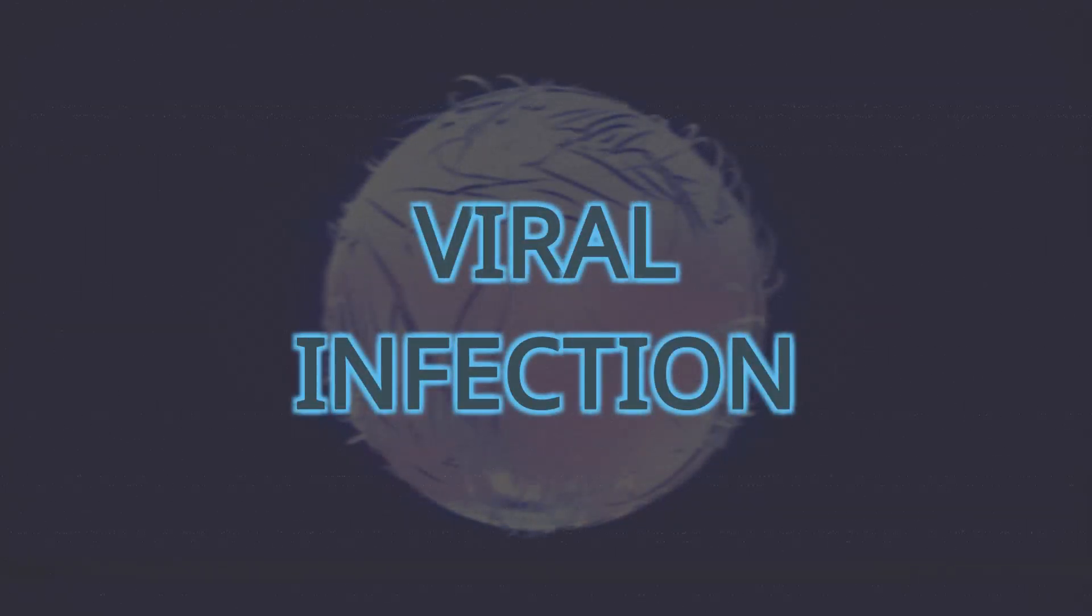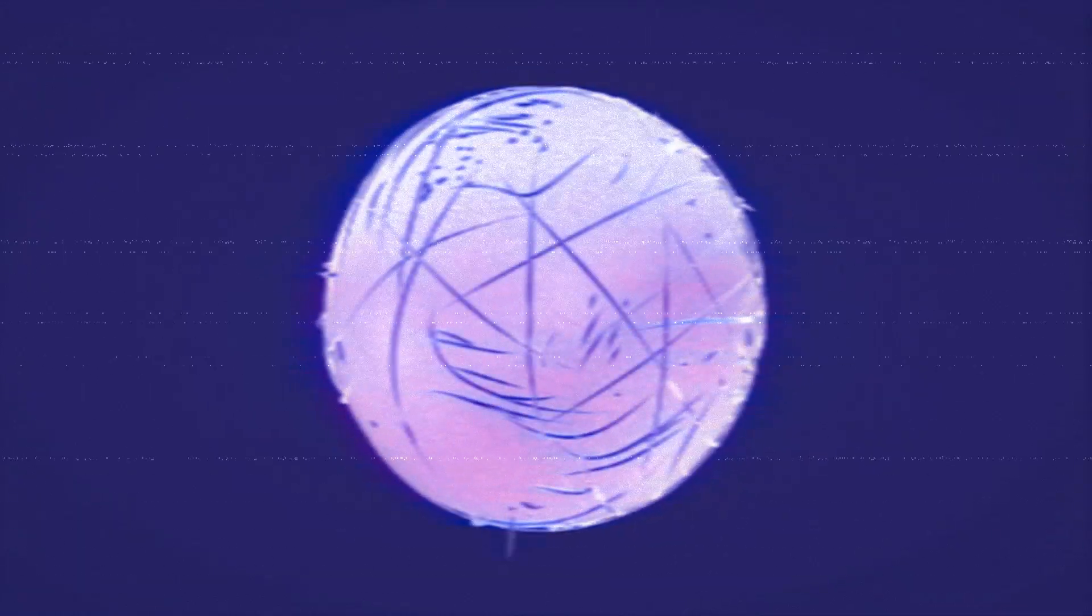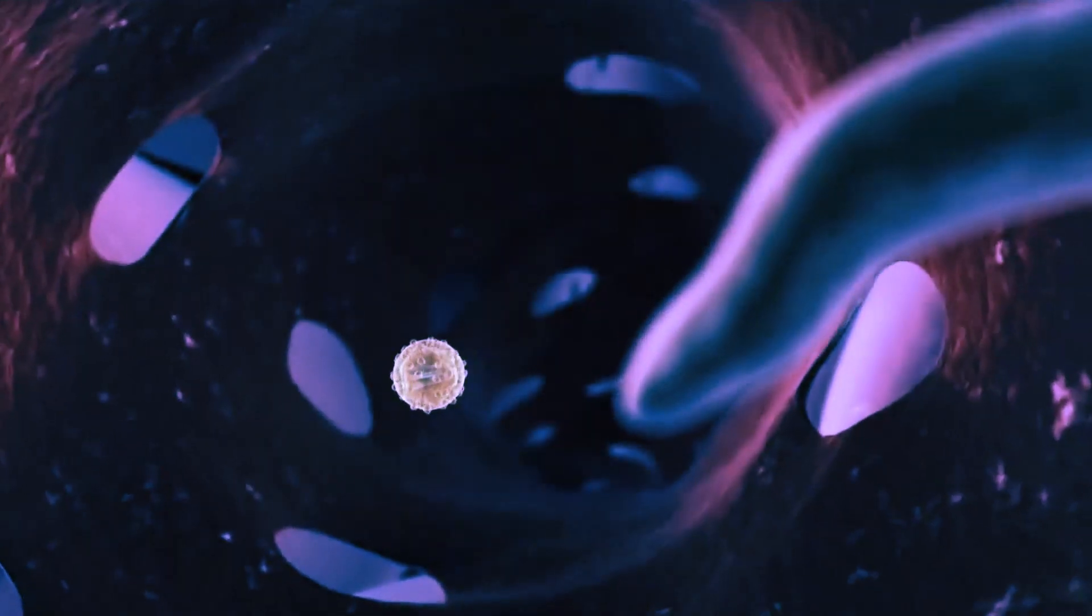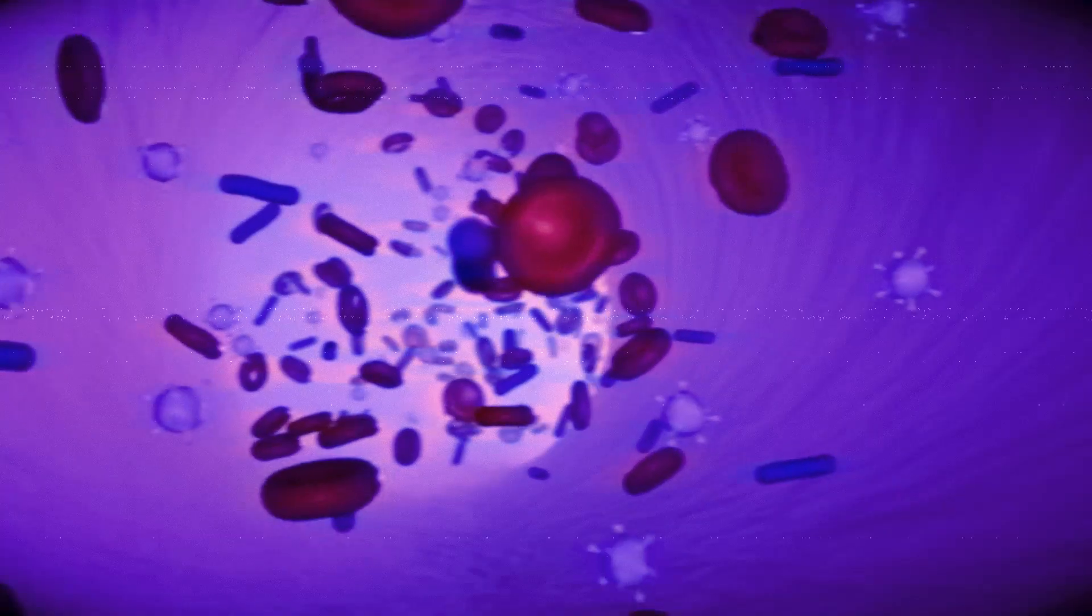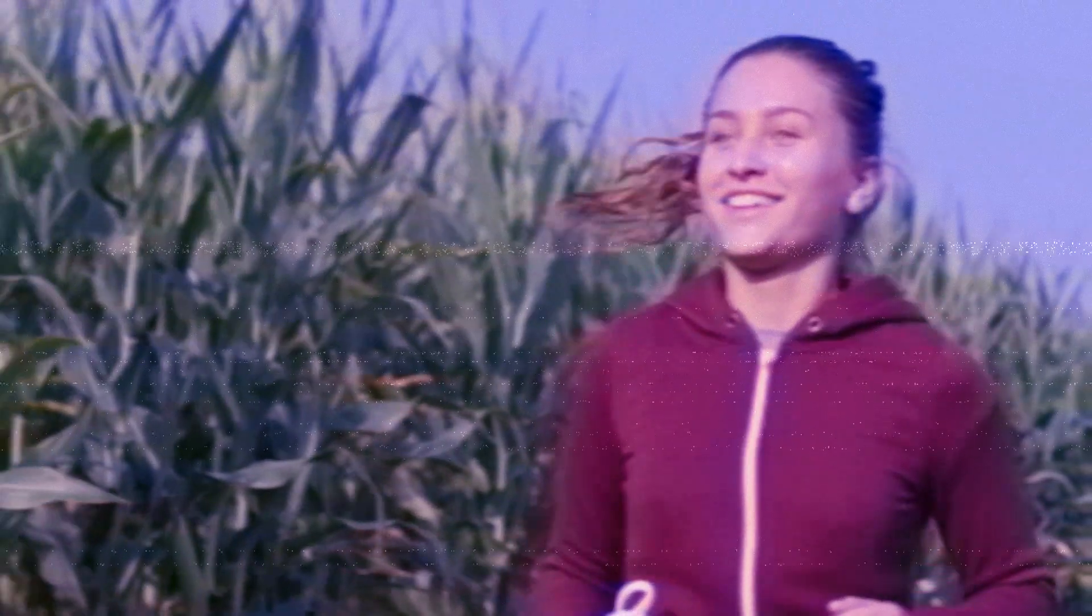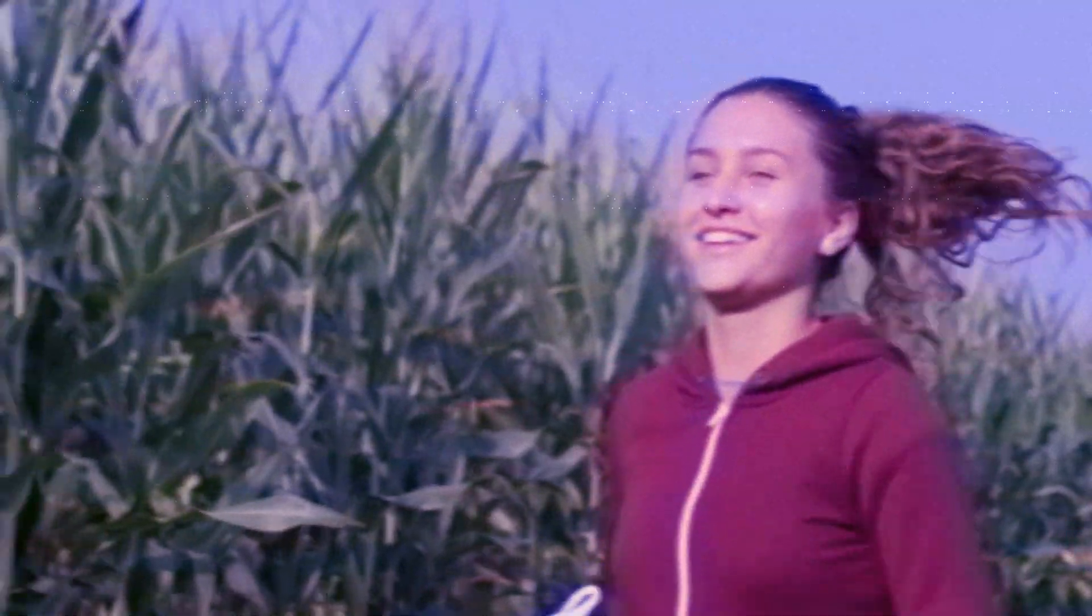Viruses are like hijackers. They invade living, normal cells and use those cells to multiply and produce other viruses like themselves. This can kill, damage, or change the cells and make you sick. Different viruses attack certain cells in your body such as your liver, respiratory system, or blood. When you get a virus, you may not always get sick from it. Your immune system may be able to fight it off.